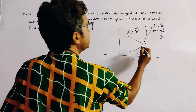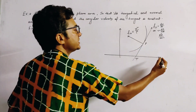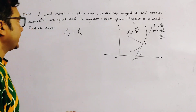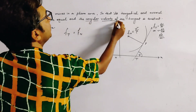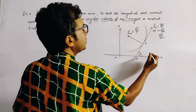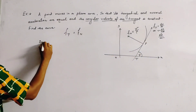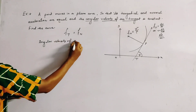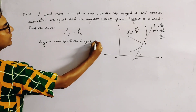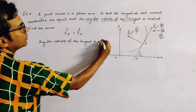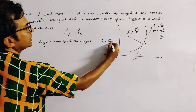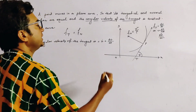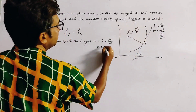Let the tangent at P cut the x-axis at angle ψ. It is also given that the angular velocity of the tangent is constant. The angular velocity of the tangent is given by ψ-dot, that is dψ/dt — the change of ψ with respect to time t. It is given as constant; let it be ω.